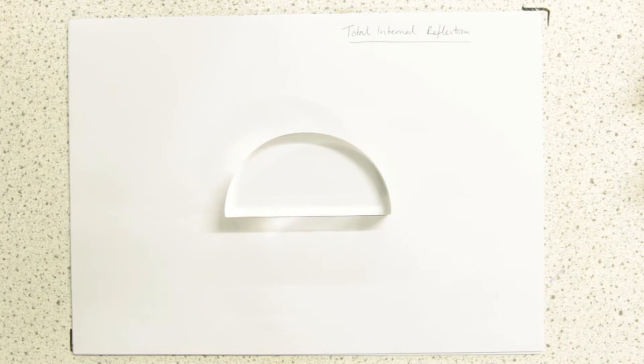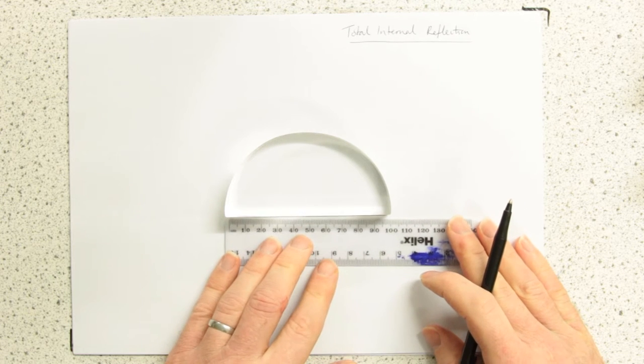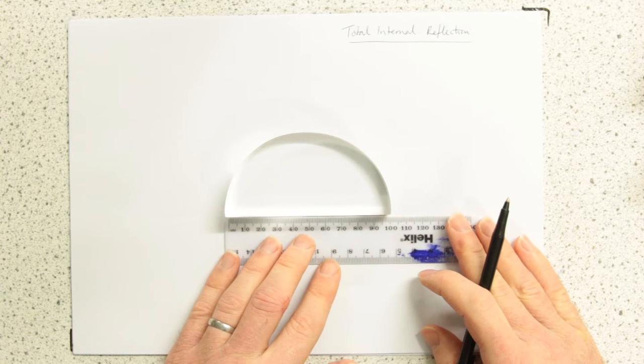So I've drawn around in the same way as I did my rectangular block, but I need to know one more thing. I need to know what the midpoint is, and that's 9.8 centimetres.